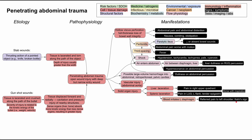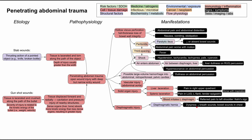Splenic laceration in particular is known to irritate the left diaphragm, which can be referred to the left shoulder — this is called Kehr's sign. Regarding diaphragmatic injury: the diaphragm separates the chest and abdomen and can be injured from penetrating wounds to either region. A possible manifestation is diaphragmatic hernia, where a piece of bowel pokes through the defect in the diaphragm up into the chest. This can result in shortness of breath and decreased breath sounds because the lungs cannot expand properly.